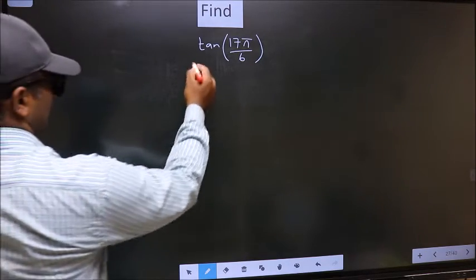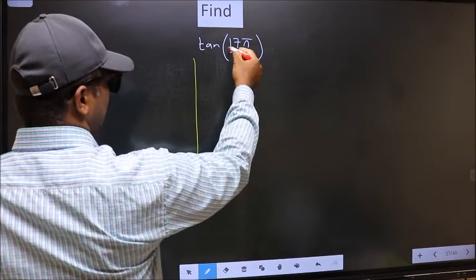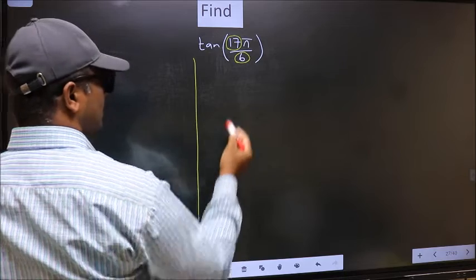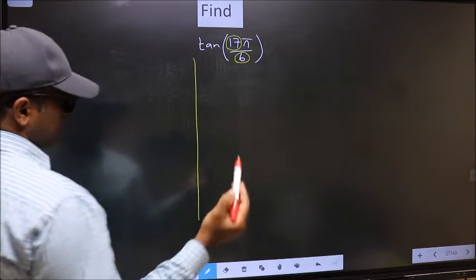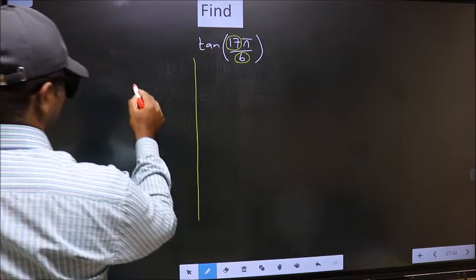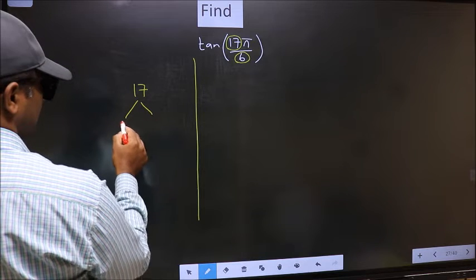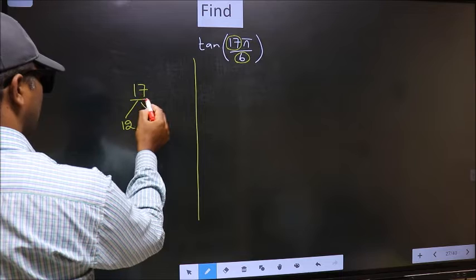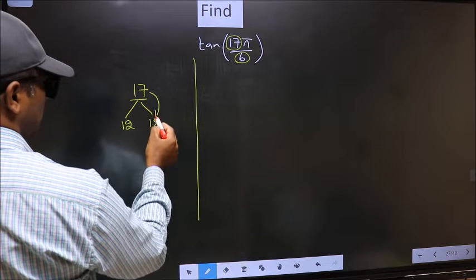See, in the denominator we have 6, in the numerator 17. Now you should check, 17 is close to which multiple of 6? What I mean is, 17 and here you should write multiples of 6, that is 12 and 18. Now 17 is close to which number? This is close to 18.